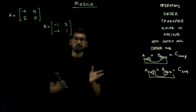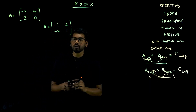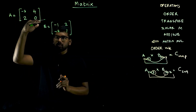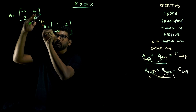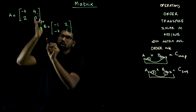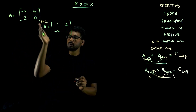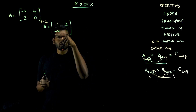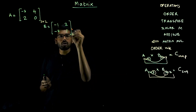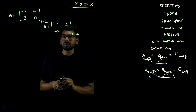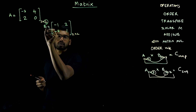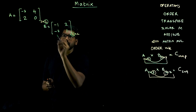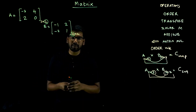We need to find A into B. First, let's check the order. Matrix A has 2 rows and 2 columns, so it is a 2 cross 2 square matrix. Matrix B also has 2 rows and 2 columns, so it is also a 2 cross 2 matrix. Since the columns of B match the rows of A, we can multiply.